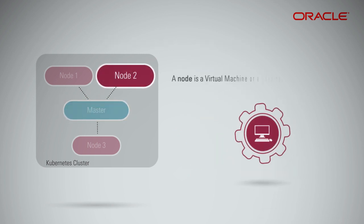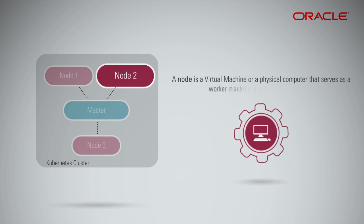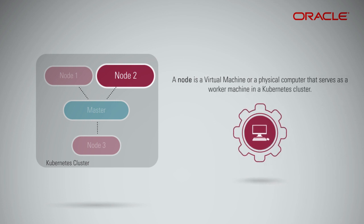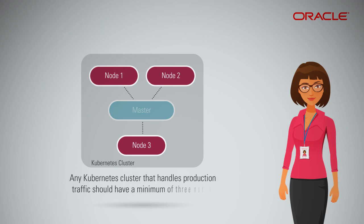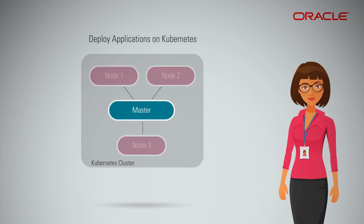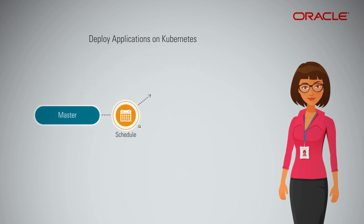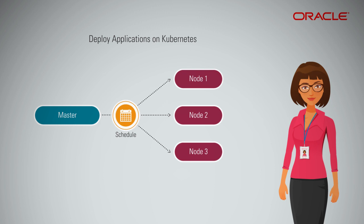A node is a virtual machine or a physical computer that serves as a worker machine in a Kubernetes cluster. Any Kubernetes cluster that handles production traffic should have a minimum of three nodes. When you deploy applications on Kubernetes, you tell the master to start the application containers. The master schedules the containers to run on the cluster's nodes. The nodes communicate with the master using the Kubernetes API, which the master exposes.